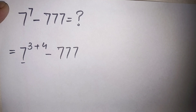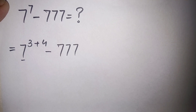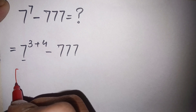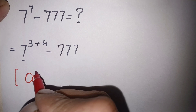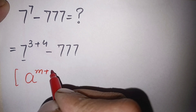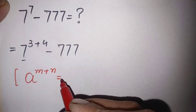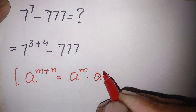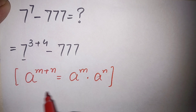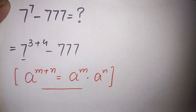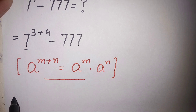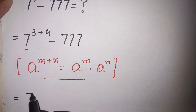Now for 7 raised to power (3+4), we will use an exponential identity: a raised to power (m+n) can also be written as a raised to power m times a raised to power n. Using this identity, 7 raised to power (3+4) becomes 7 raised to power 3 times 7 raised to power 4.